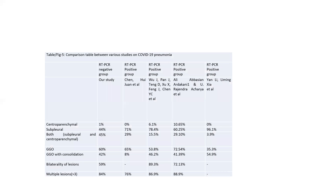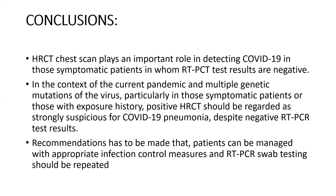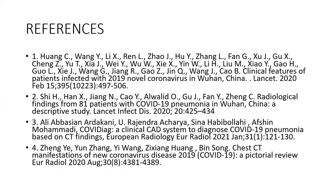This comparison table shows various studies on COVID-19 pneumonia. Our study includes only the RT-PCR negative group, while other studies are on RT-PCR positive groups, but subpleural location, ground glass opacities, and consolidation are common in both groups. Thus, HRCT chest scan plays an important role in detecting COVID-19 pneumonia in symptomatic patients with negative RT-PCR results. In the context of the current pandemic and multiple genetic mutations of the virus, a positive HRCT should be regarded as strongly suspicious for COVID-19 pneumonia despite negative RT-PCR results. Recommendations: patients should be managed with appropriate infection control measures and RT-PCR swab testing should be repeated. Thank you.